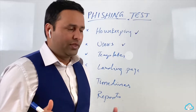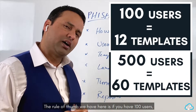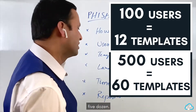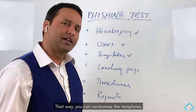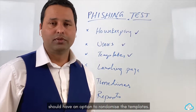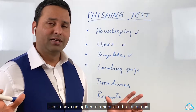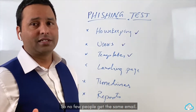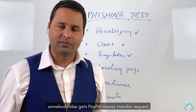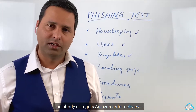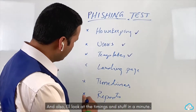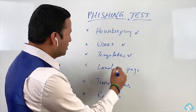Templates: pick different templates, not just one for everybody. The rule of thumb we use is: for 100 users, a dozen templates; for 500 users, maybe three dozen or sixty templates. Randomize the templates so no few people get the same email — somebody gets an Office 365 password reset, somebody else gets a PayPal money transfer request, somebody else gets an Amazon order delivery.